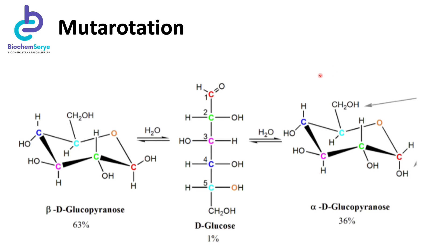In water, the ring-closing hemiacetal reaction of glucose occurs in both the forward and reverse directions, resulting in the spontaneous opening and closing of the ring. At equilibrium, due to steric hindrance, the beta anomer of glucose accounts for approximately 63 percent of the concentration, while the alpha anomer accounts for around 36 percent, and the straight-chain open form accounts for only one percent. This interconversion from the alpha anomer to the beta anomer and vice versa, resulting in a change in optical rotation, is referred to as mutarotation.